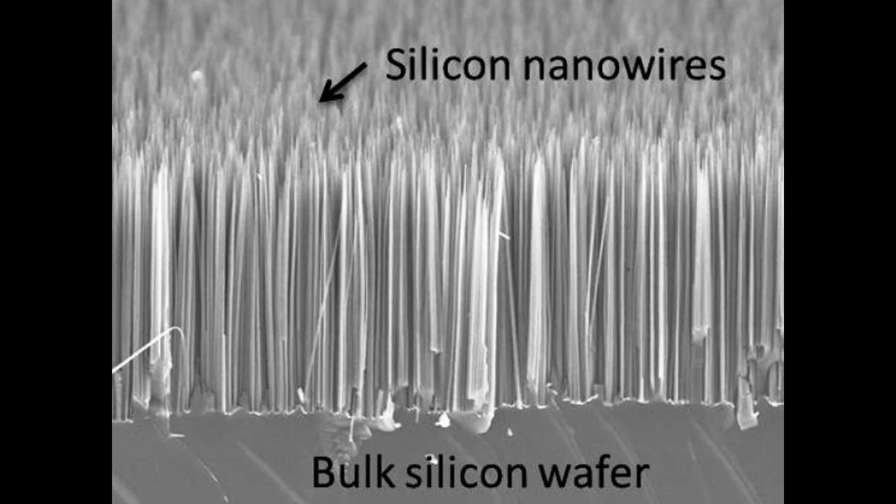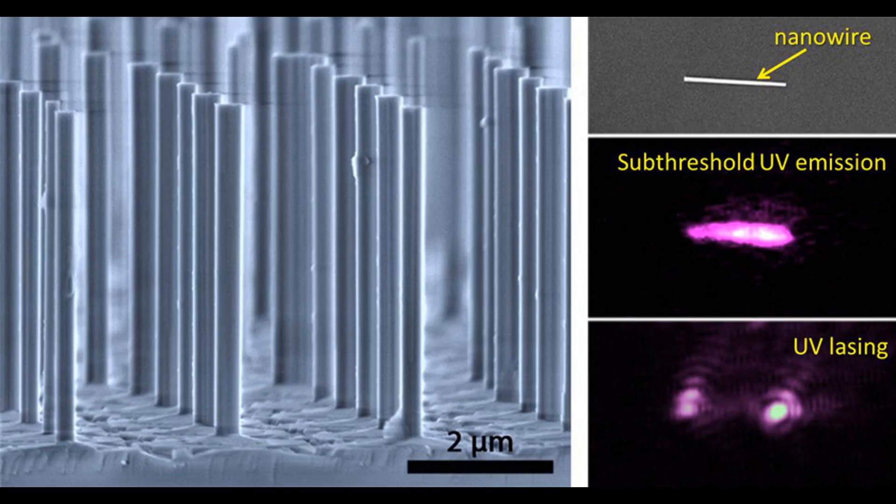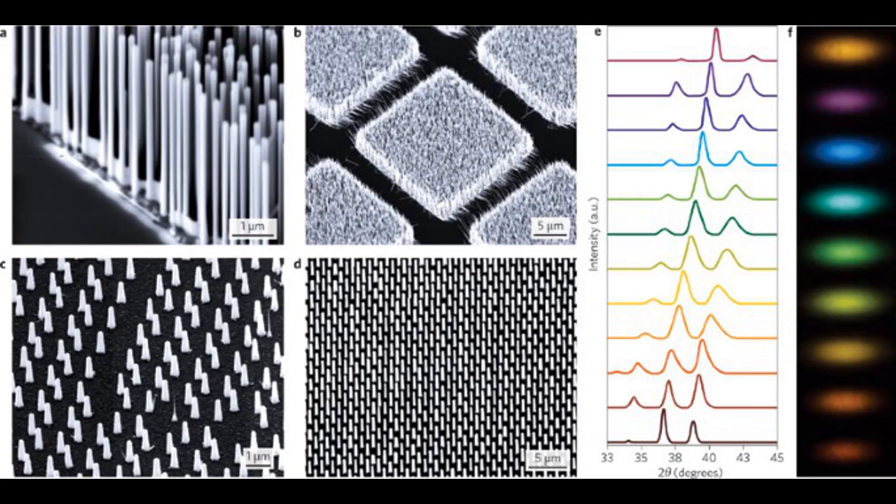Nanowires are typically made of a variety of materials, including metals, semiconductors, and insulators, and have diameters that are typically in the range of 1 to 100 nanometers.